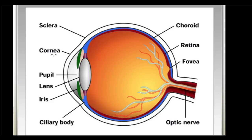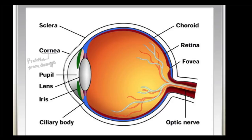Basically there is an outer transparent membrane in the eye which is called the cornea. This is the outer transparent part of the eye, the outer transparent membrane, and it basically protects the eye from damage and also allows light to enter the eye.